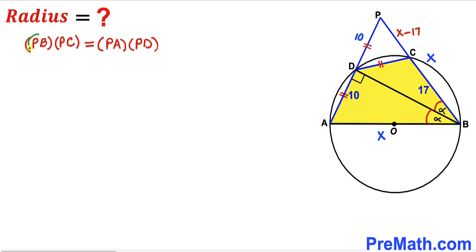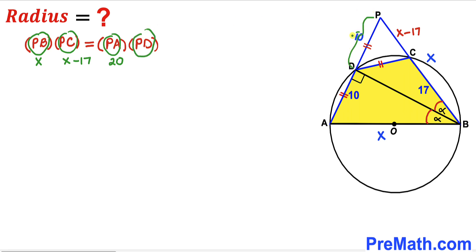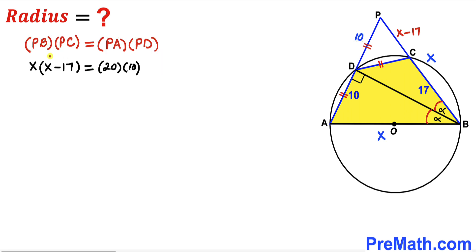Substituting known values: PB is X, PC is X minus 17, PA is 10 plus 10 equals 20, and PD is 10. So we get X times (X minus 17) equals 20 times 10, which gives X squared minus 17X equals 200.